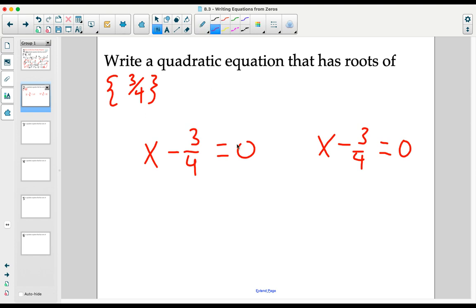We'll engage a skill similar to our last example where we multiply everything by a common denominator to clear out the fractions. On the left, we get 4x minus 3 equals zero. On the right, we get 4x minus 3 equals zero.